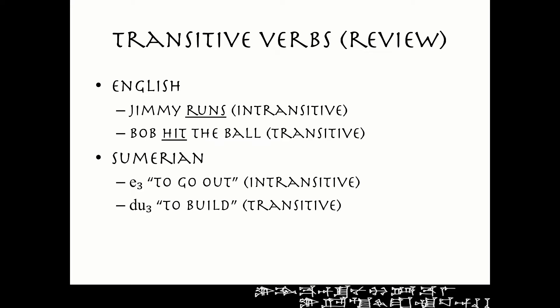Of course, Sumerian has the same sort of distinction. A3 means 'to go out,' which is an intransitive verb — so 'Gudea went out,' he's not going out something, there's no direct object. However, 'Gudea built the temple' — du3, 'build,' is a transitive verb because you have to build something. Sumerian distinguishes the way that it forms intransitive verbs and transitive verbs, and we're going to see the markers for transitive verbs in the past tense today.